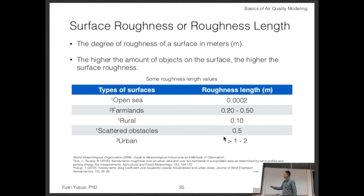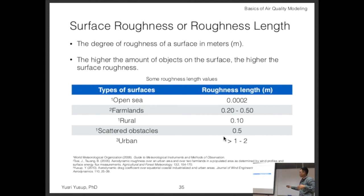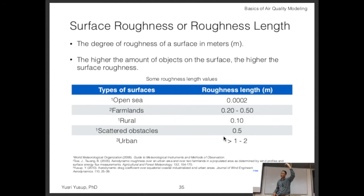Farmlands with trees and crops — representing places like the US or Europe where they plant wheat and corn — have a roughness length of about 0.2 to 0.5. Over forest it's about one meter. Oil palm plantations are quite tall, so the roughness length is mostly 1 to 2 meters — even though the oil palm itself is about 16 meters tall, the roughness length is not equal to that height, it's below that at about 1 to 2 meters.